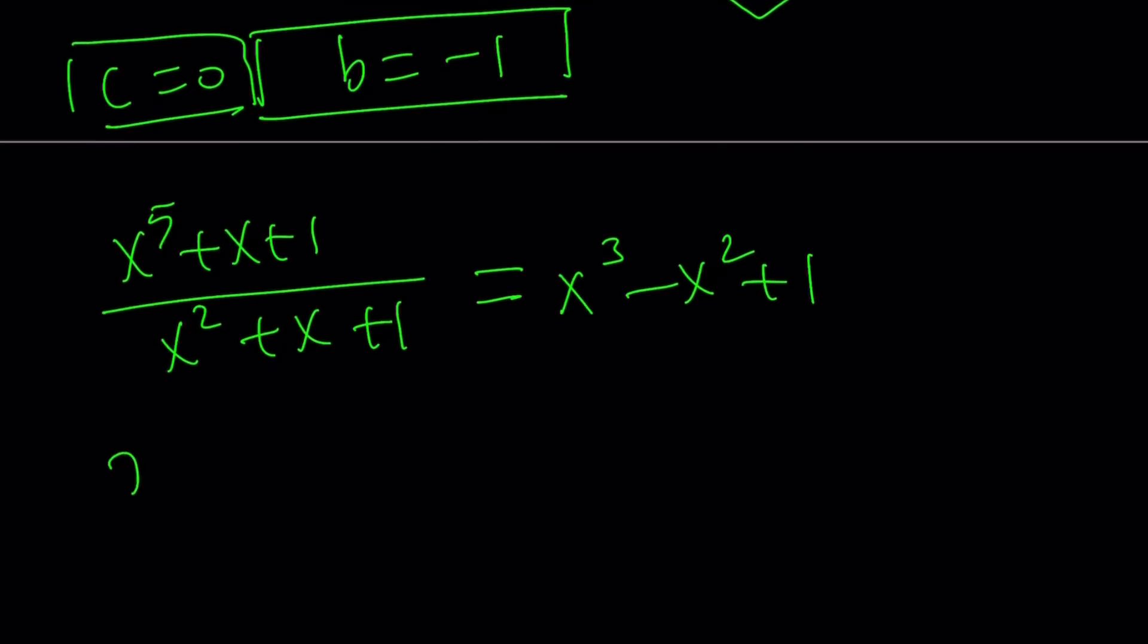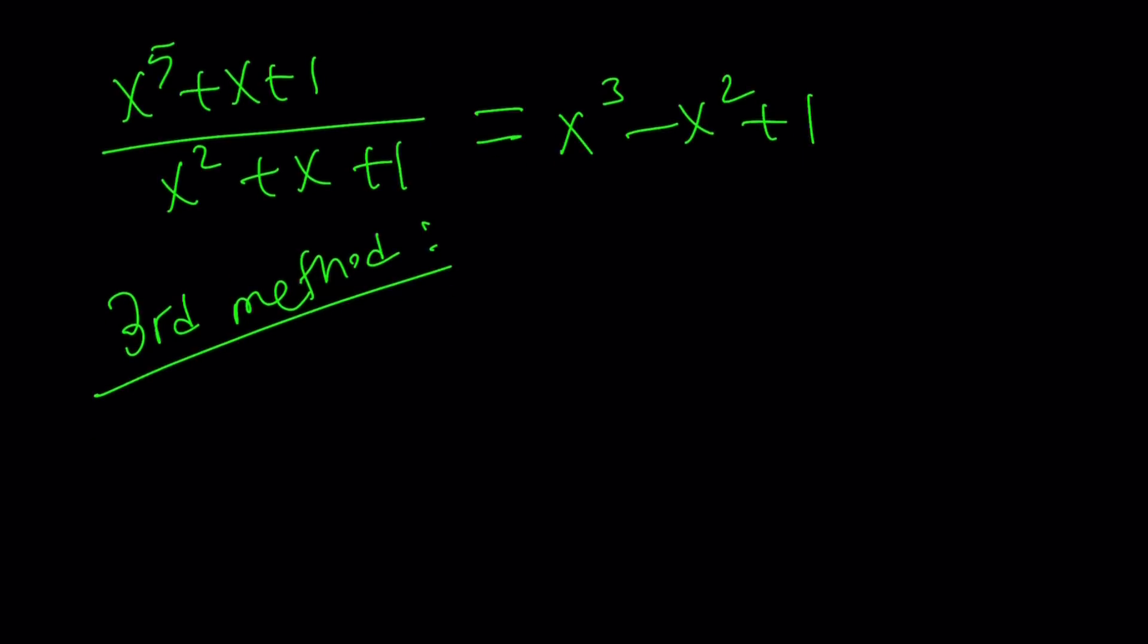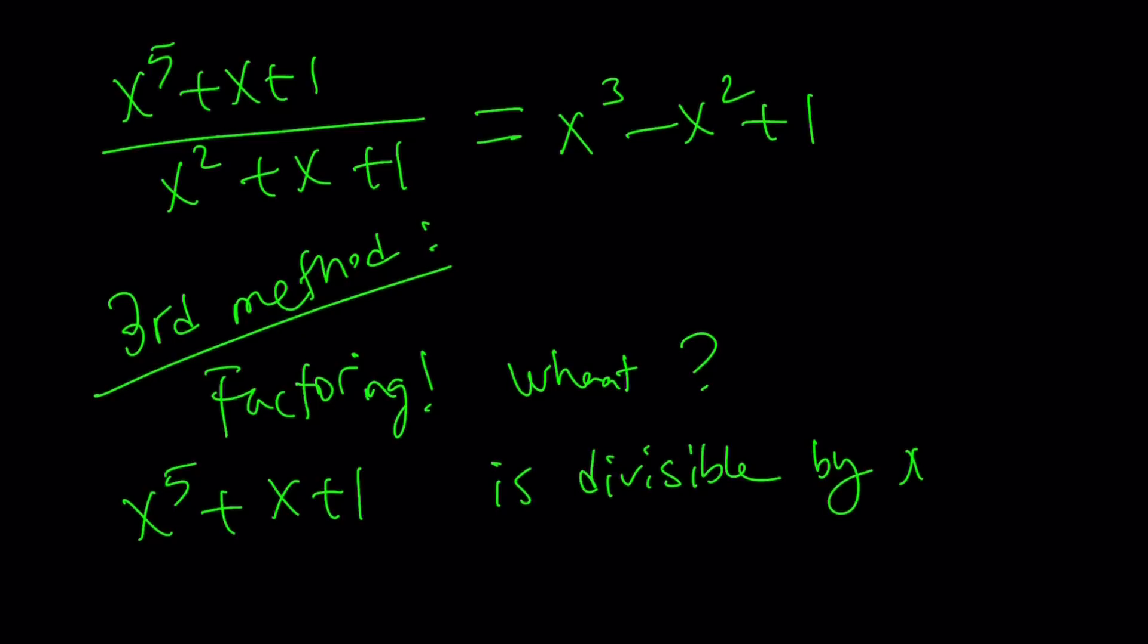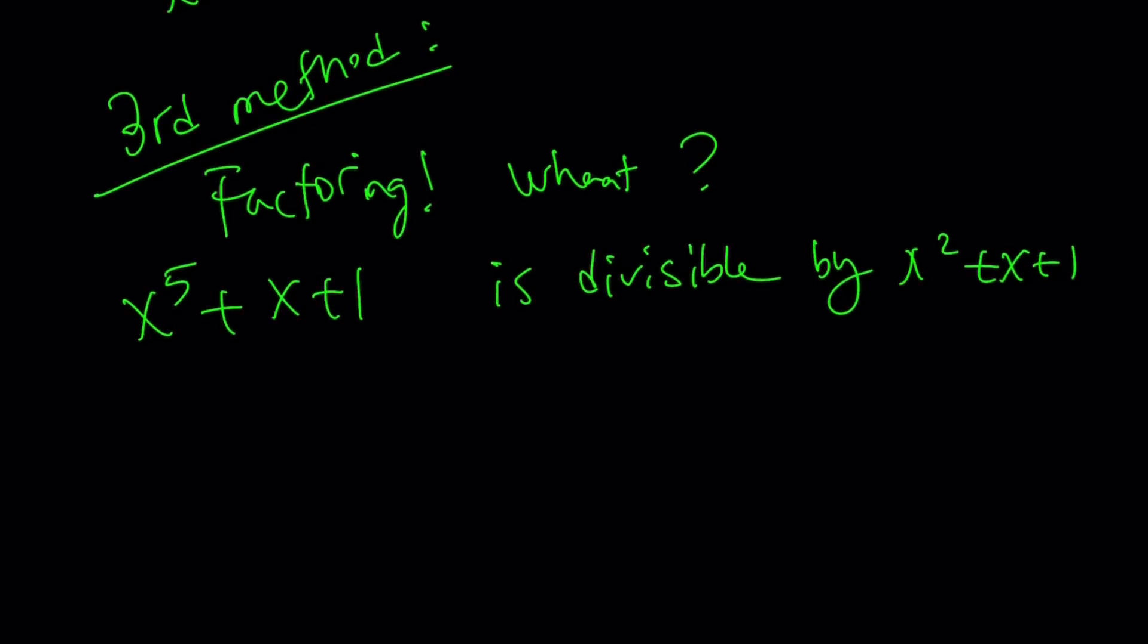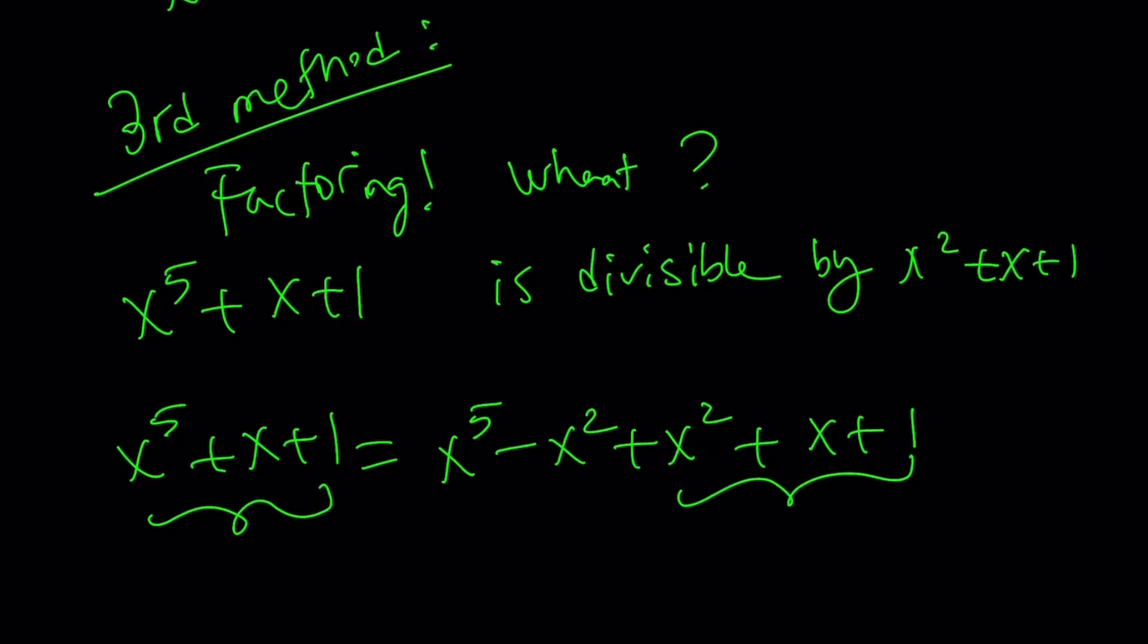This brings us to the end of the second method and the beginning of the third method. Let's go ahead and talk about the most awesomest method, and we're going to use factoring. And what are you going to use factoring? How do you use it? Well, since we already know twice that x to the fifth plus x plus one is divisible by the bottom, which is x squared plus x plus one, why don't we kind of try to break it down? So, I'm going to write the x to the fifth plus x plus one as x to the fifth minus x squared plus x.